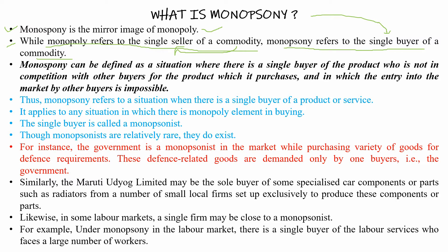Now we have monopsony's definition. Monopsony can be defined as a situation where there is a single buyer of the product, who is not in competition with other buyers for the product which it purchases, and in which entry into the market by other buyers is impossible. It means monopsony is defined as a market situation where there is a single buyer of a particular product — a good or service — and there is no competition from other buyers for the same product.